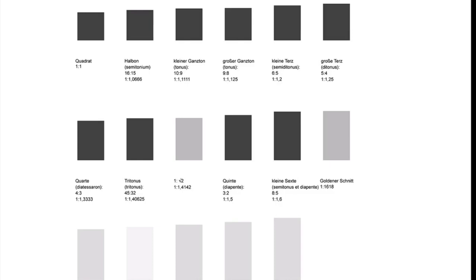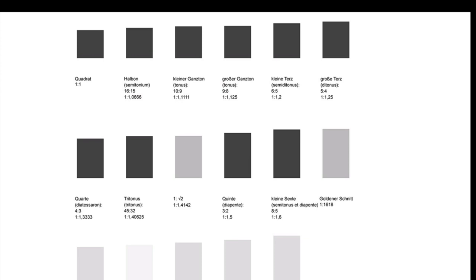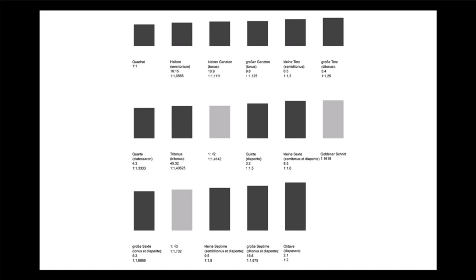The golden section is approximately 1:1.618, which is very close to the 5:8 proportion. For the octave, one string of length 1 and another of length 2 gives an octave. I also included the proportion 1 to root 3, important in architecture. If you see all these proportions next to each other, you can barely distinguish them with the naked eye — that's why I said it's more an intellectual game. Inside a room you could barely distinguish these proportions exactly; a few centimeters longer or shorter wouldn't be recognized.